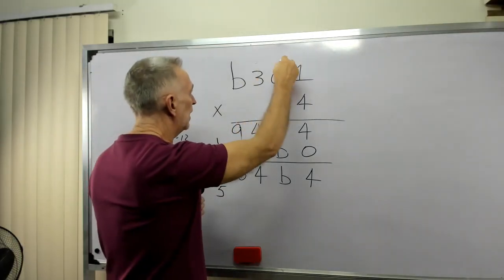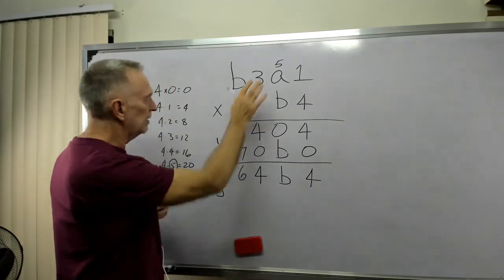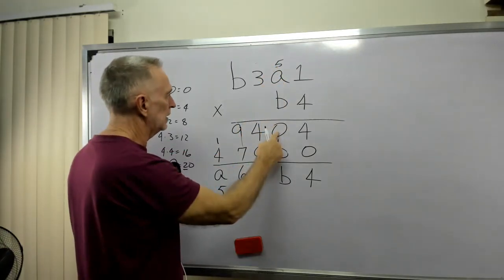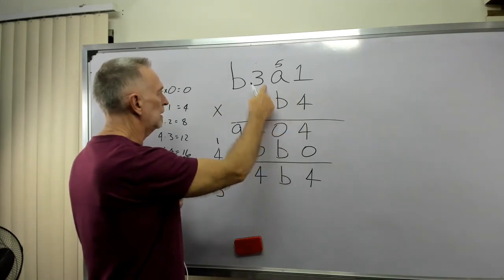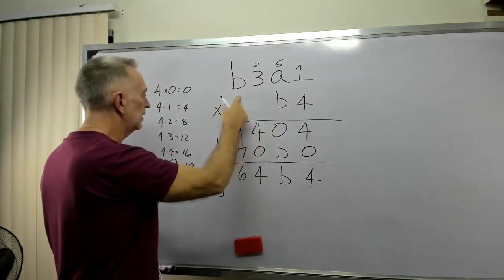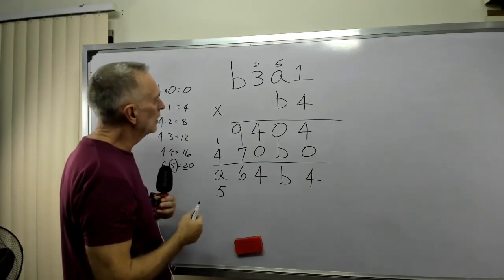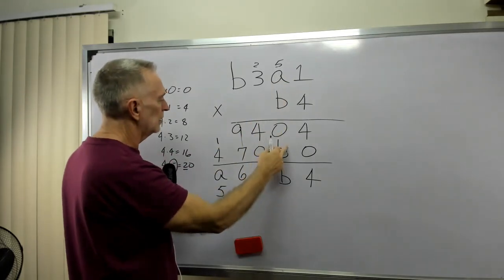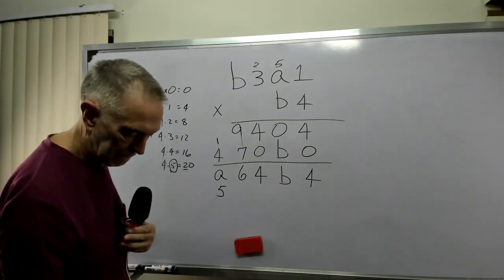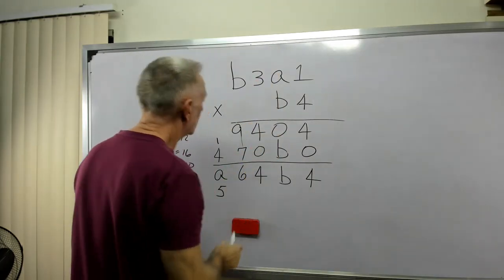So let me just write a 5 in here. Matter of fact, I'm going to, well, for now I'll leave it like that. I started to replace the A, but I think I'll wait. Okay, 4 times 5 is 20. Carry the 2. 4 times 3 is 12. Plus the 2 is 14. 4 times B is 9. 4 times B is 9. B times 1 is B. So let me erase these remainders.